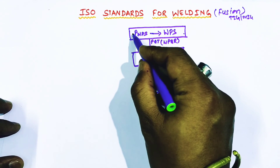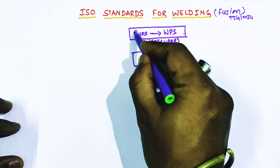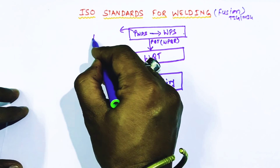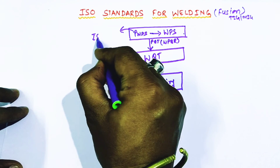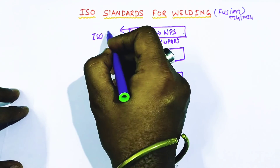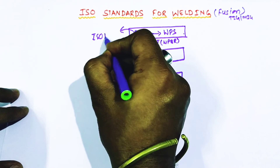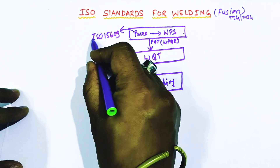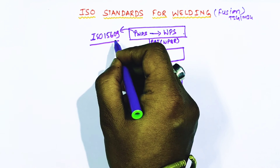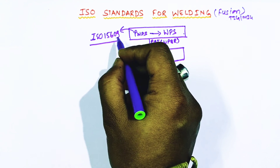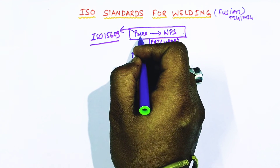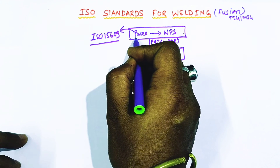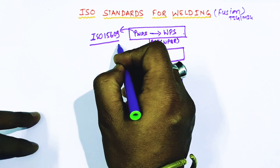For preparation of the preliminary WPS, the ISO code is ISO 15609. ISO 15609 covers the preparation of the welding procedure specification, that is the preliminary welding procedure specification.